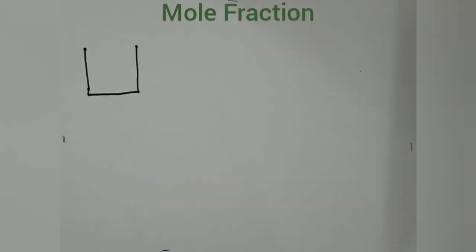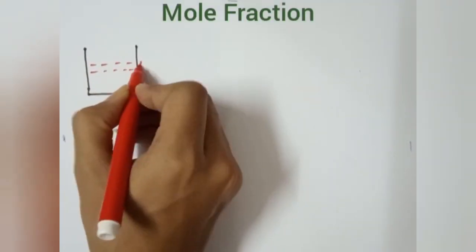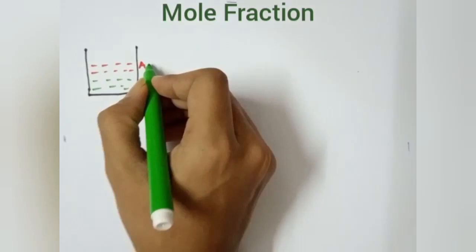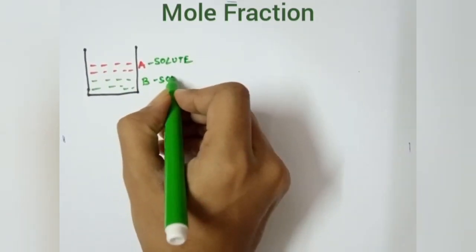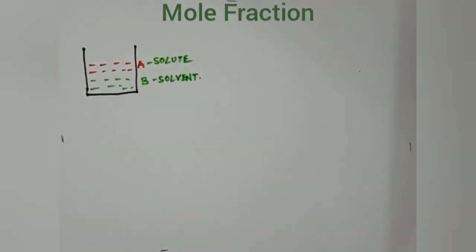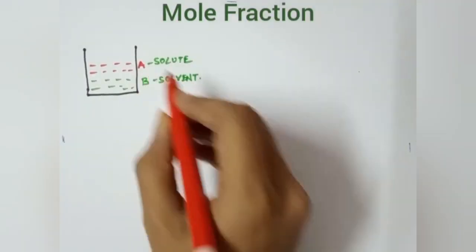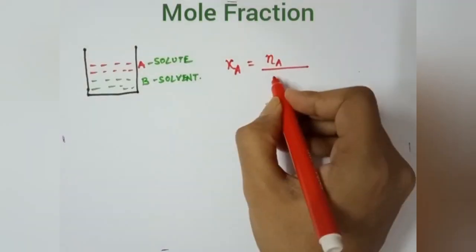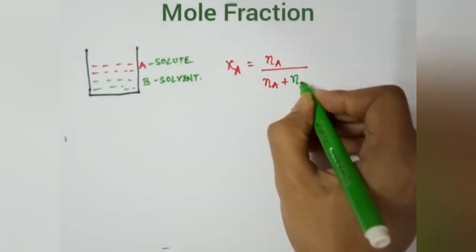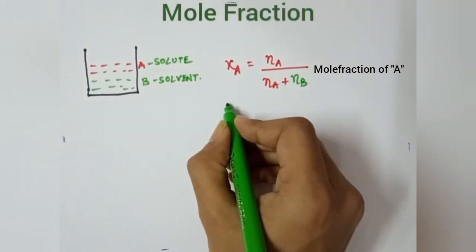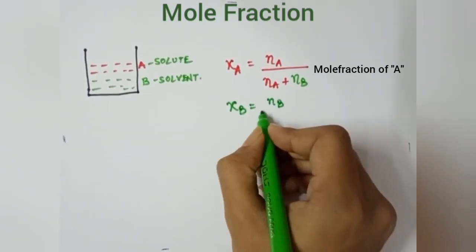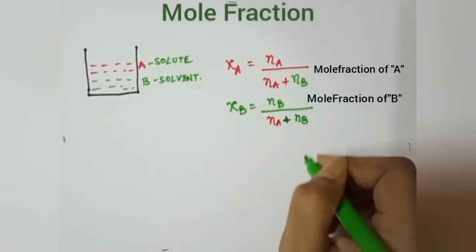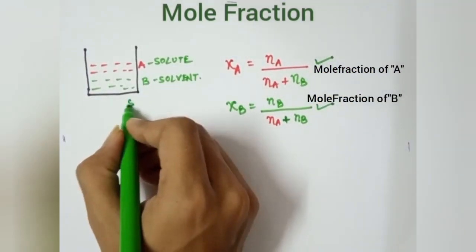Let us consider there is a beaker with a component A in red color and another liquid B in green color. In this case, A is the solute and B is the solvent, and they form a mixture solution. The mole fraction is denoted by X. The mole fraction of A, XA, equals nA divided by (nA + nB), which is the total moles in solution. Similarly, the mole fraction of B, XB, equals nB divided by (nA + nB).